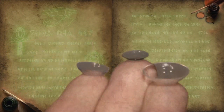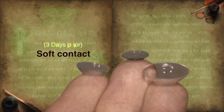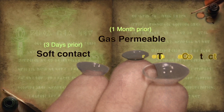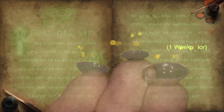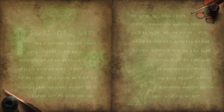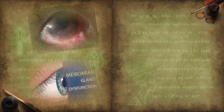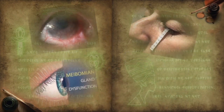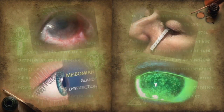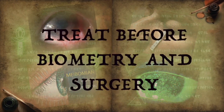Before performing biometry, the patient needs to remove a soft contact lens three days prior, a gas permeable lens at least one month prior, and a toric lens one week prior. Ocular surface disorders, MGD, dry eyes, and punctate keratitis need adequate prior treatment before biometry and surgery.